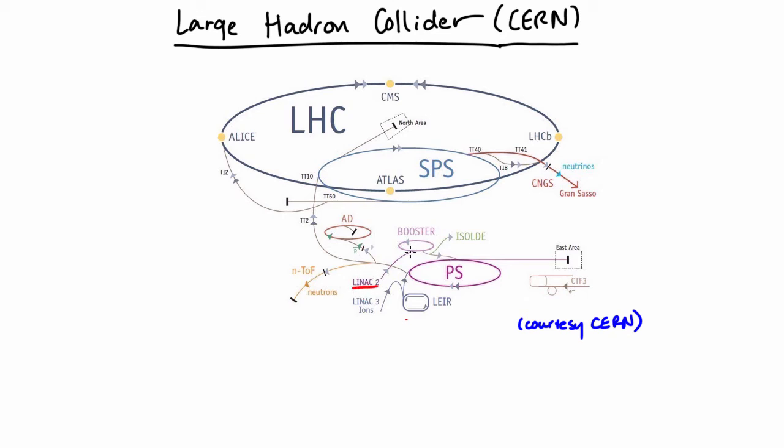We begin with protons, which are injected into LINAC2, which I have underlined here. The protons get accelerated to 50 MeV, and these are then injected into the booster, where they get accelerated to 1.4 GeV. After this, the protons get sent to the proton synchrotron, which accelerates the protons even more, to 25 GeV.